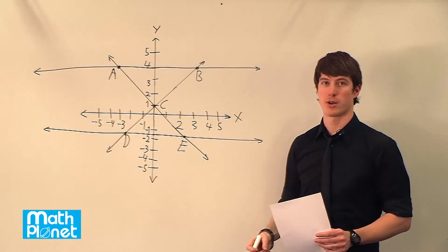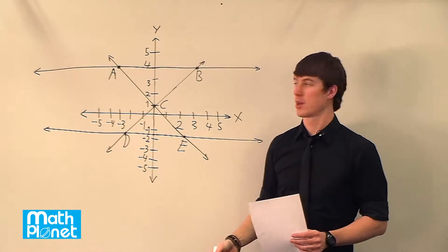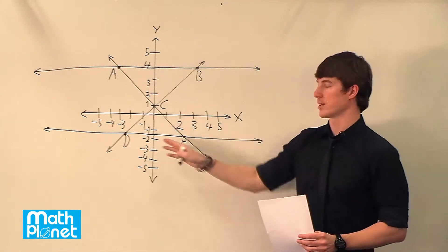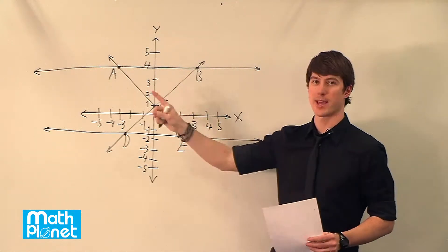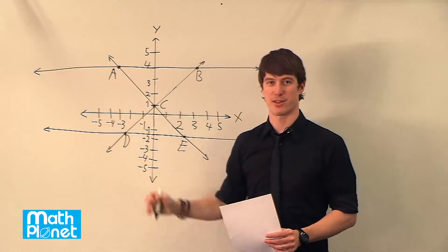Finally we might want to talk about where things intersect. Well, everywhere that I've drawn a point here is an intersection point. So AE intersects AB at A, for example.